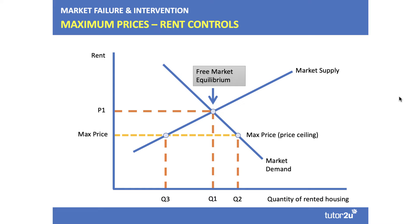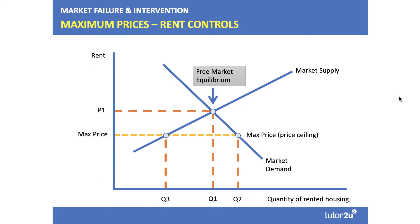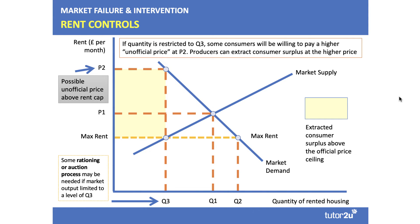In the exam you face a choice: do you just leave the diagram there, or do you draw a separate diagram? Ideally you develop the diagram. I've drawn a maximum rent in yellow below P1. At quantity Q3, there are some people willing to pay rent P2 for their property, but they're capped at the maximum rent. So there's a kind of yellow area of consumer surplus which, in theory, the landlord can extract in some way — maybe with an extra charge or some sort of underhand transaction. Here's a more developed diagram showing a disequilibrium and a potential for shadow markets, with some secondary pricing at a price higher than the maximum rent. Develop diagrams — it's always a good idea to get the top marks.